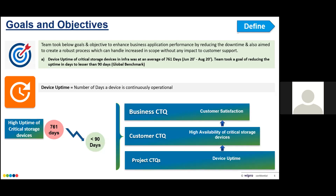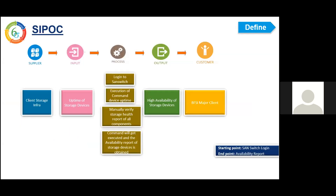This was exactly what our voice of customer was. Coming to the CTQs: our project CTQ was device uptime, the customer CTQ rolled up to high availability of critical storage devices, and our business CTQ is customer satisfaction. In this slide we have documented the SIPOC to get an overview of the activities in DMAIC. The output required from our client was high availability of storage devices, for which we drafted the detailed process flow. The input for the process comes from the client storage infra.